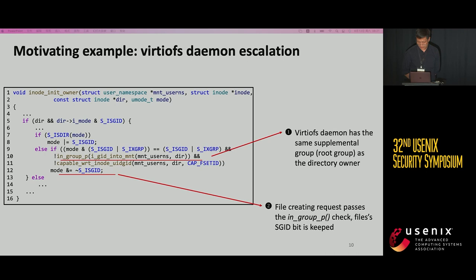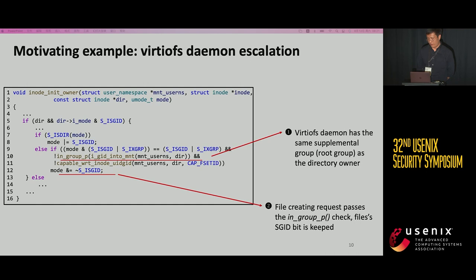Note that the VirtioFS daemon runs as the host root user and has the root group in its supplemental group by default, which is the same as the directory owner. As a result, the file creation request passes the in_group check at line 10, and the created file keeps the host root SGID bit at line 12. Thus, if the created file is executed by a host normal user, it will be executed with host root group permission, making a privilege escalation. We reported this to the VirtioFS driver developer group and they assigned us a CVE.